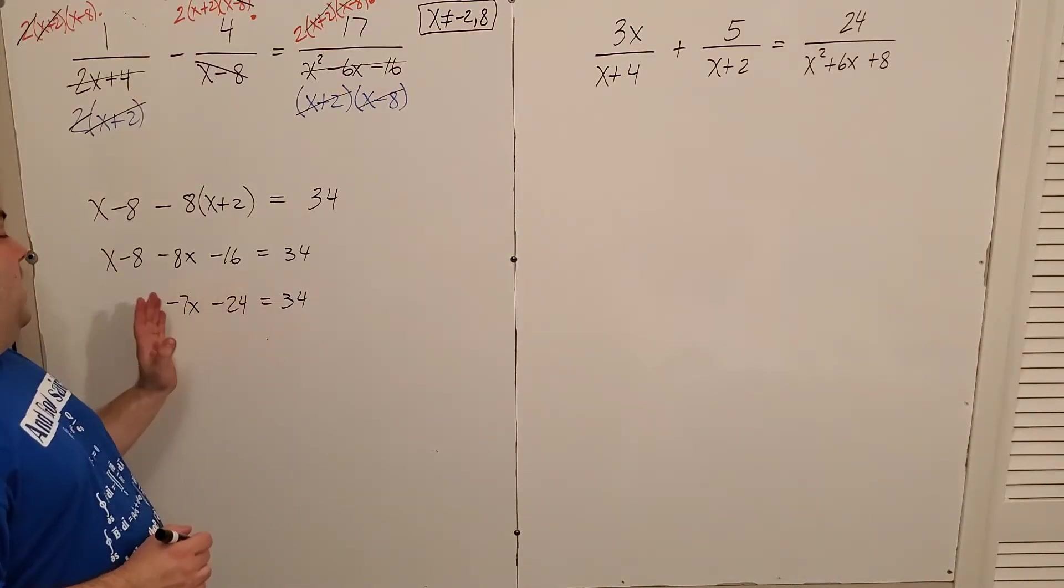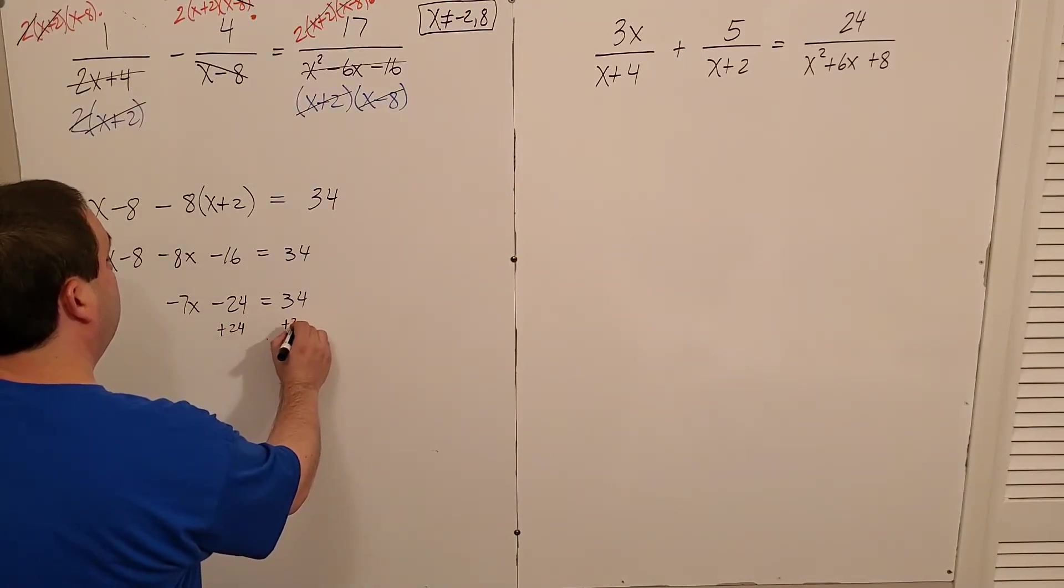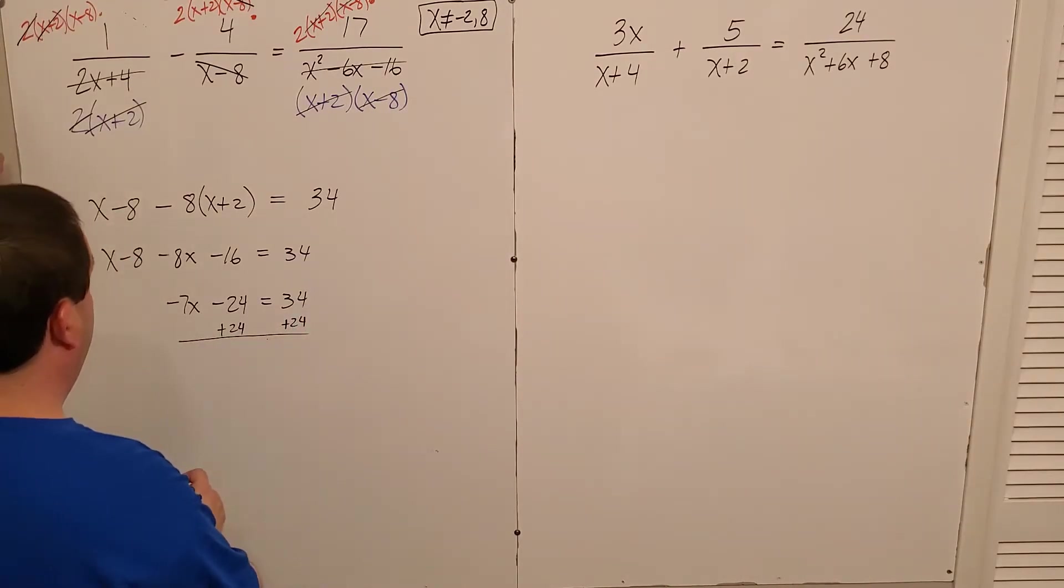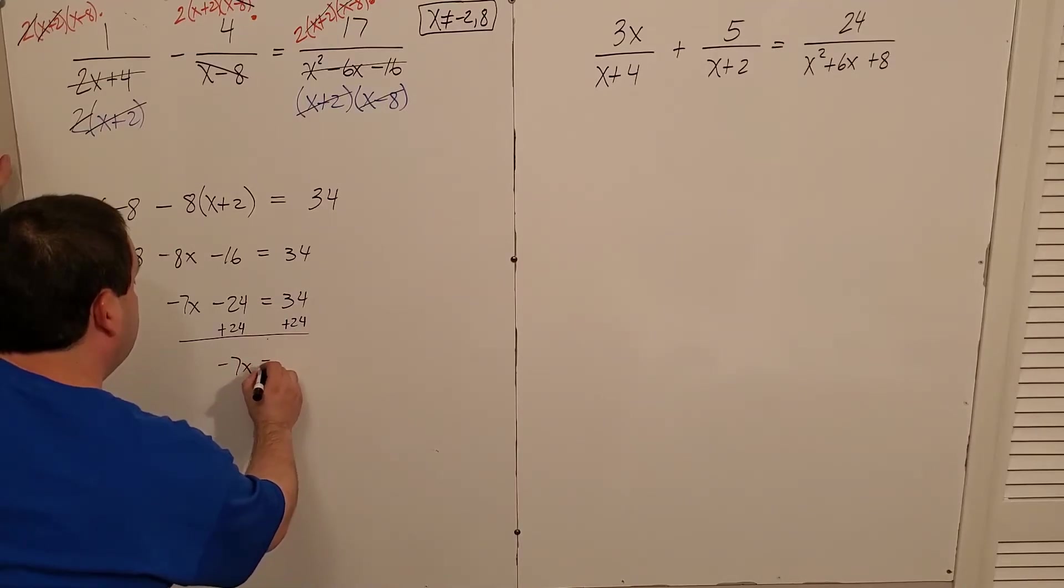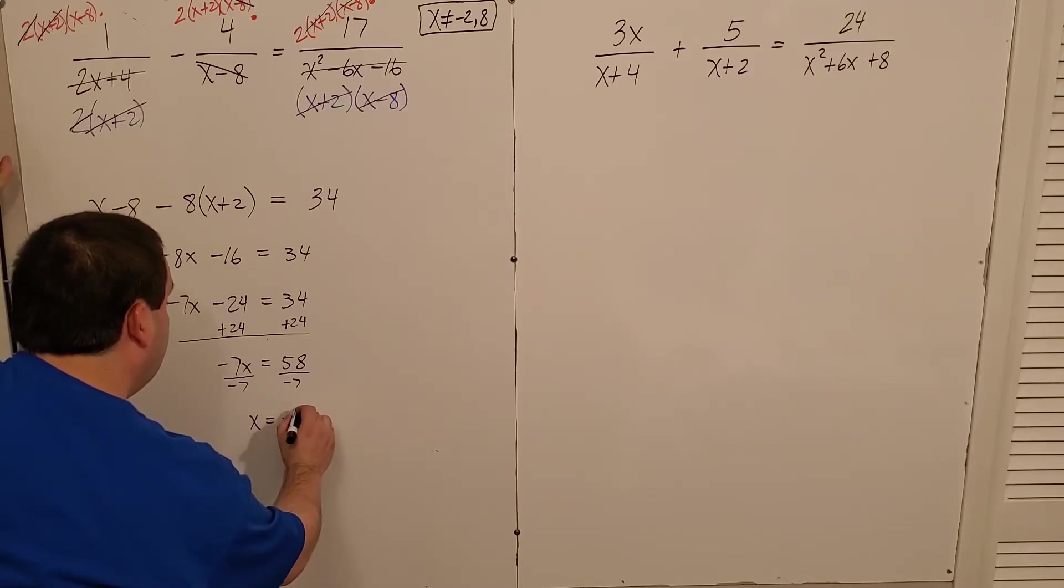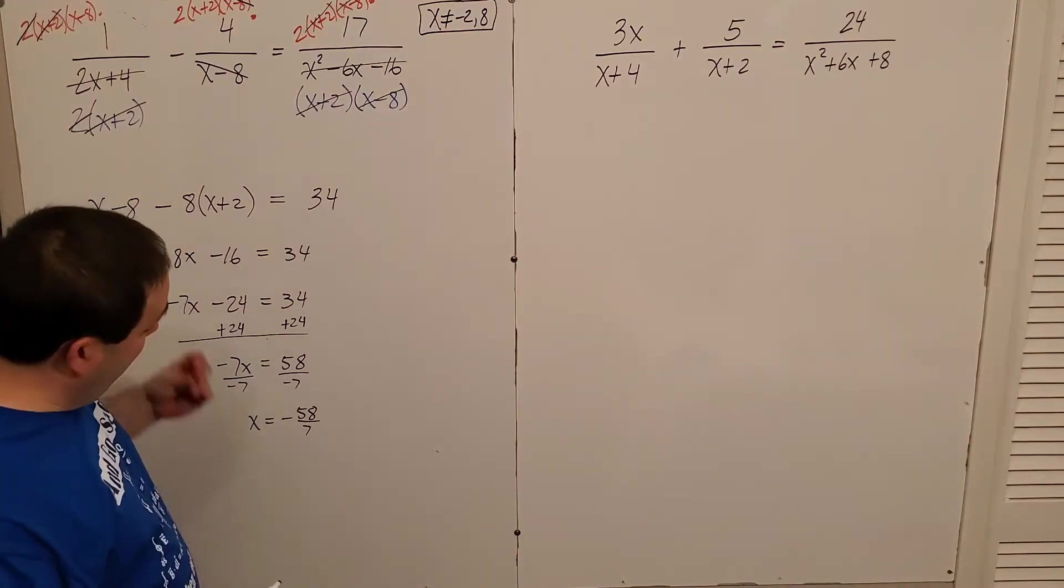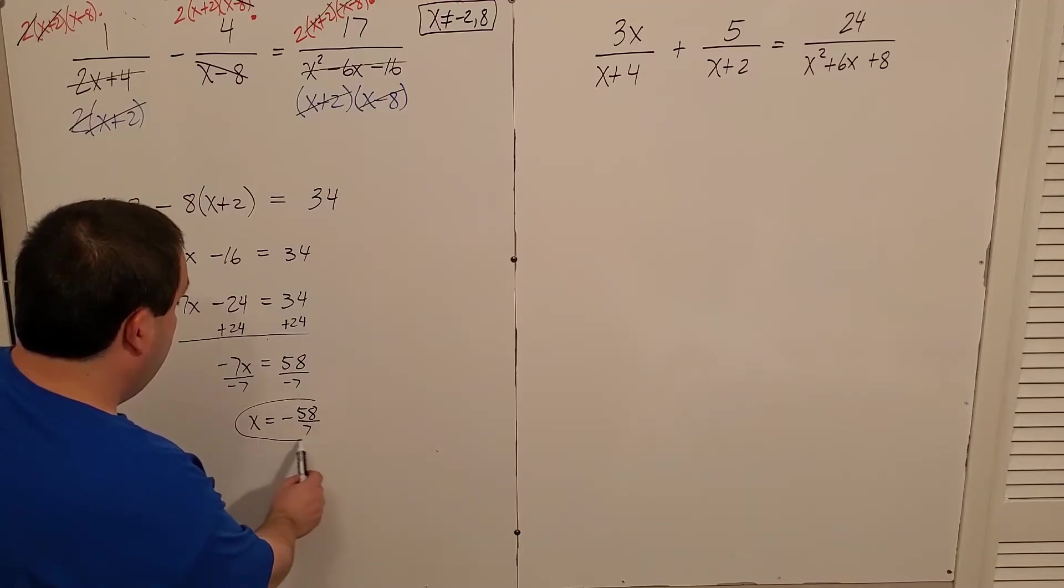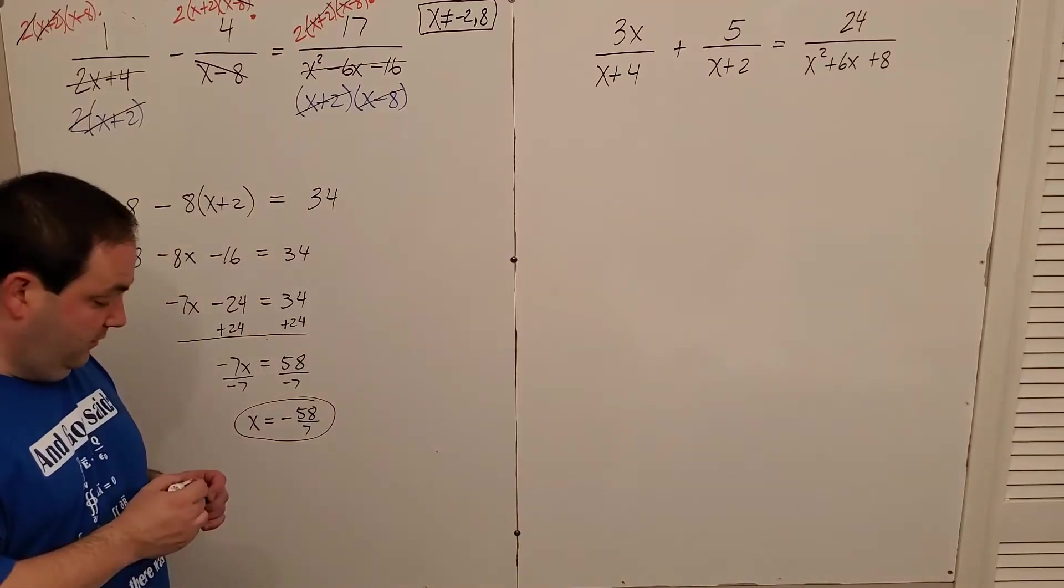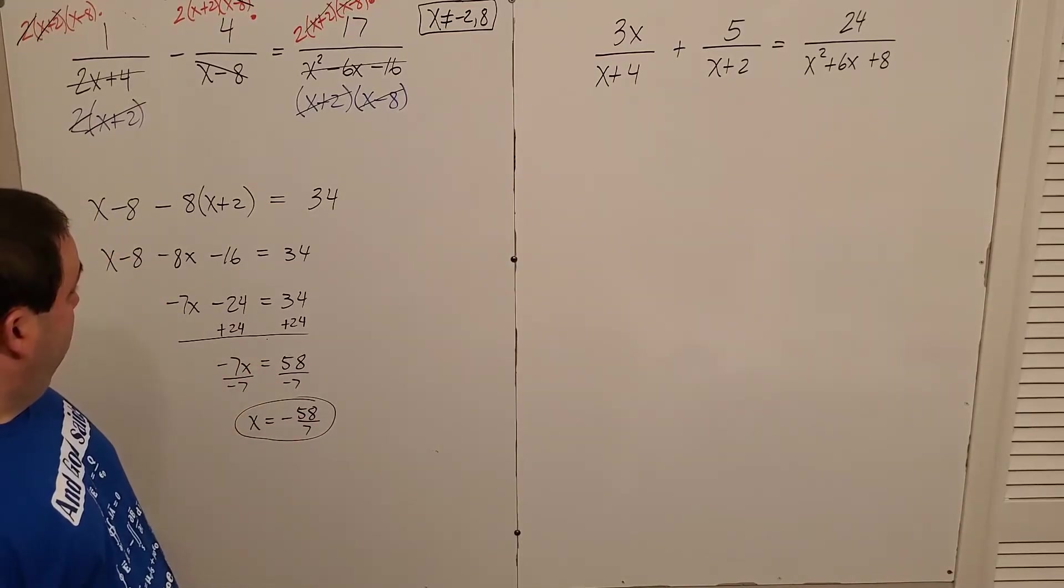I only want letters on the left. So this 24 shouldn't be there. I'm going to add the 24. So negative seven x is now equal to 58. And I'm going to divide both sides by negative seven. So I have negative 58 sevens. Too bad it wasn't 56 sevens, huh? That would have come out real nice. Oh well. Just leave the answer in that form. Improper is just fine. As long as it doesn't, as long as you can't reduce it anymore, which 58 sevens can't be.